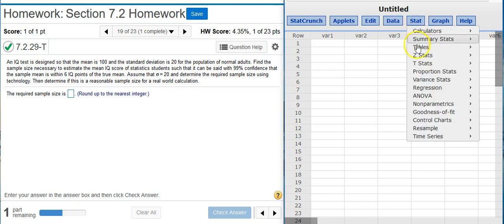To get the sample size, I'm going to go to Stat. Do I go to Z-stats or T-stats next? I'm going to go to Z-stats because the key question is, do we know what the population standard deviation is? In this case, we do know what the population standard deviation is. They tell us right here in the problem sigma equals 20.